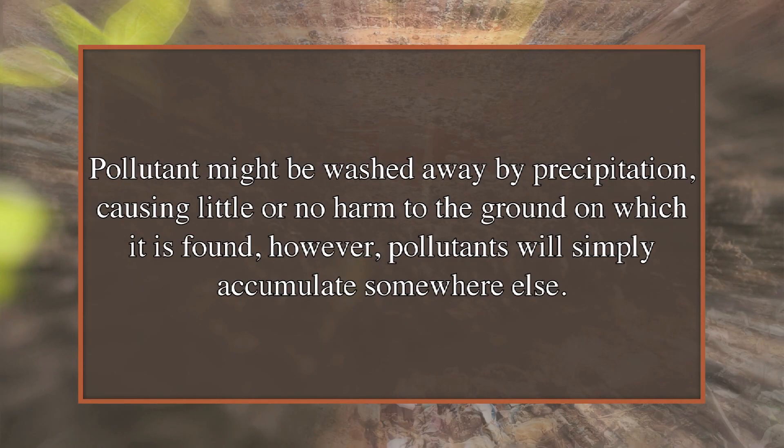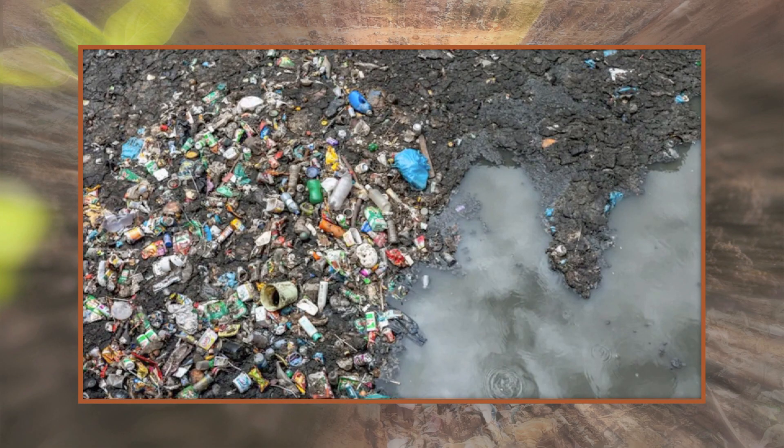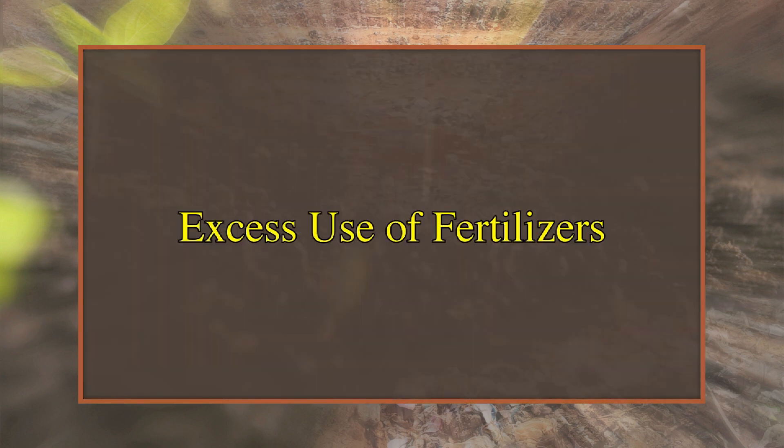Municipal waste includes garbage, composted sludge from treatment plants, and sewage from sanitary fields. Pollutants might be washed away by precipitation causing little harm initially, but will simply accumulate somewhere else. In the long run, these can get deposited into the soils of surrounding areas, polluting them by altering their chemical and biological properties. They also contaminate drinking water and aquifer sources, causing a vast number of diseases.